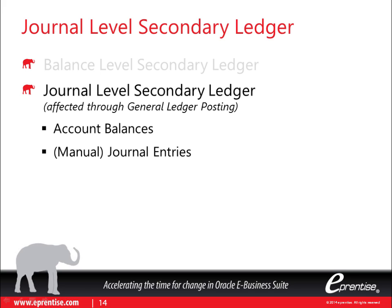The journal-level secondary ledger not only maintains account balances, but it also maintains manual journal entries. So when you drill down through your secondary ledger, you will actually see all of the journal entries that you've made to your primary ledger transformed to your secondary ledger. Depending on how you've set up your journal-level secondary ledger, the accounting rules ensure that every time you make a journal entry to your primary ledger, those entries will be transformed based on the accounting rules, mappings, et cetera, that you've set up. So your secondary ledger is going to be a full representation of your general ledger and related journal entries.